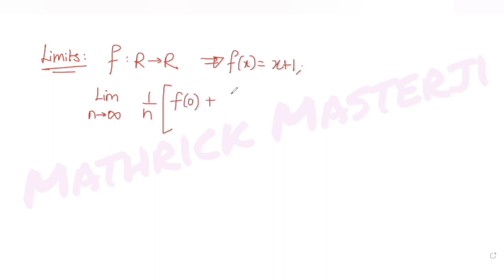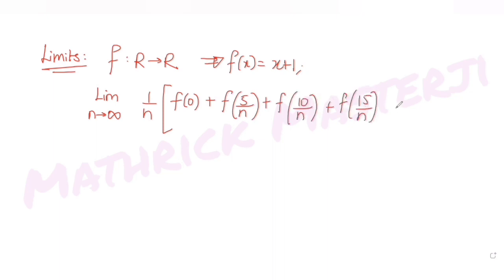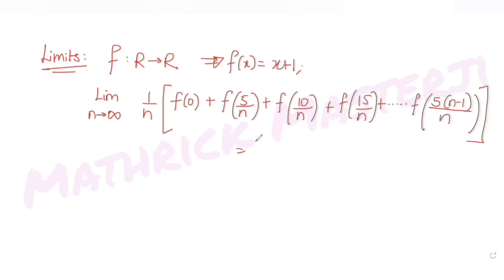f of 5 over n, f of 10 over n, f of 15 over n, and so on till f of 5 times n minus 1 divided by n. We have been asked to find the value of this entire limit expression.